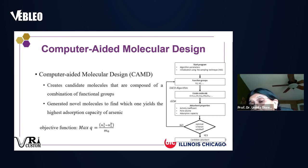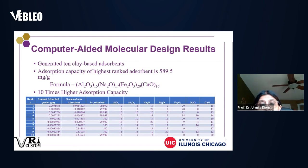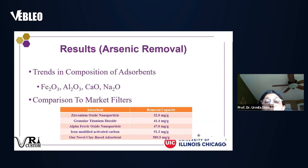We then maximized adsorption capacity by designing how many of each functional group are present in a new molecule. This was a single-objective problem without uncertainty. We designed the new molecules and identified the 10 best candidates — all showed very high percentage adsorption. We also minimized molecular weight to keep materials cheaper.